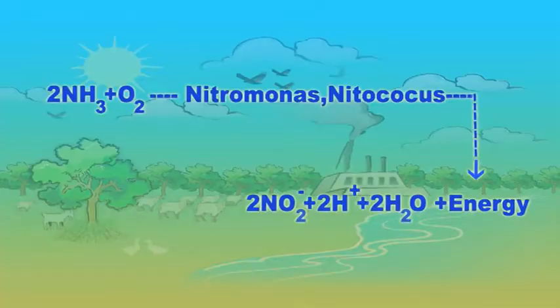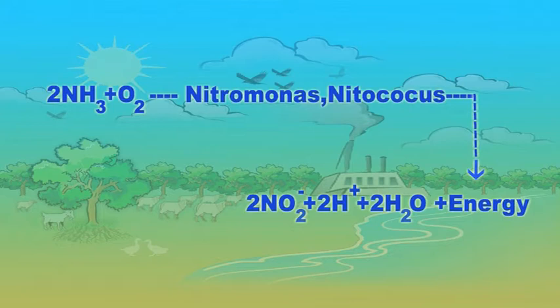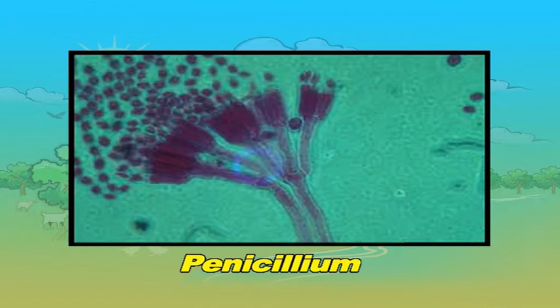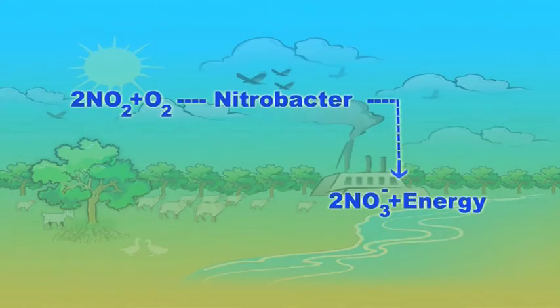Nitrification. In this step, ammonia produced in the previous step gets converted into nitrites and nitrates. Nitrosomonas and Nitrococcus bacteria carry out the conversion of ammonia to nitrites: 2NH3 + O2 → 2NO2⁻ + 2H⁺ + 2H2O + energy. Conversion of nitrites to nitrates is brought about by bacteria like Nitrobacter and Penicillium (a fungus): 2NO2⁻ + O2 → 2NO3⁻ + energy.